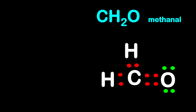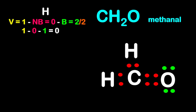Our first example is methanol, which is the same thing as formaldehyde. Let's first find the charge on the hydrogen atoms. They are the same, so the charge for one will be the charge for the other based on how the structure is drawn. The valence electron for hydrogen is 1 — hydrogen is from group 1. According to this structure, we have 0 non-bonding electrons. The bonding electrons for hydrogen is 2, so it's 2 divided by 2. So 1 minus 0 minus 1 gives 0.